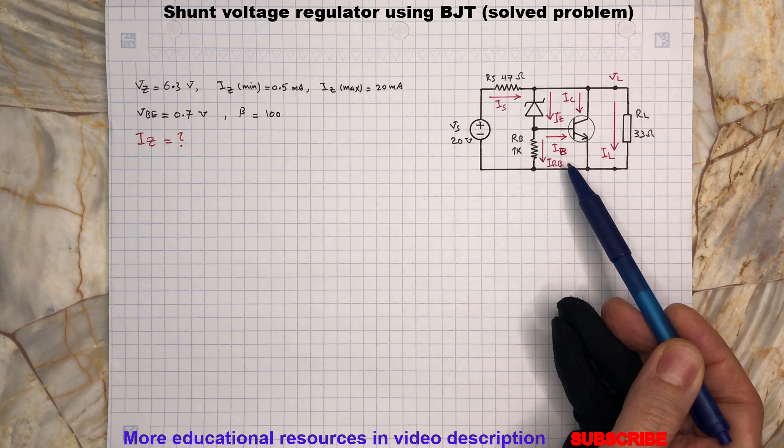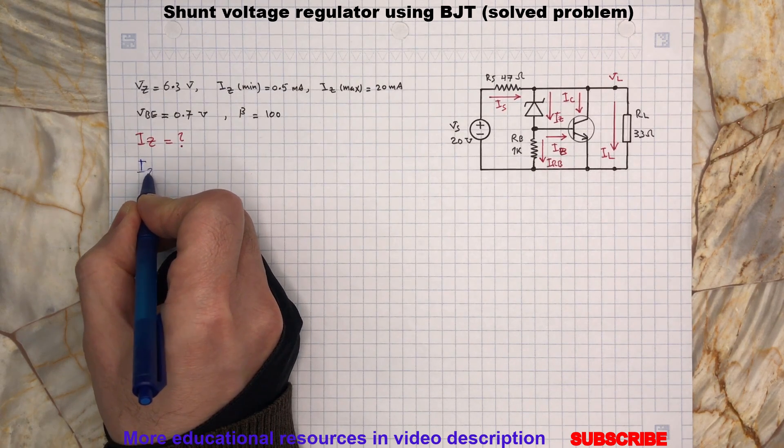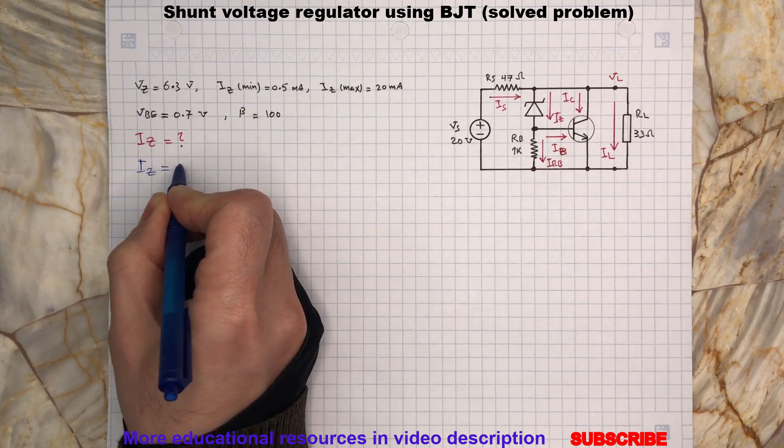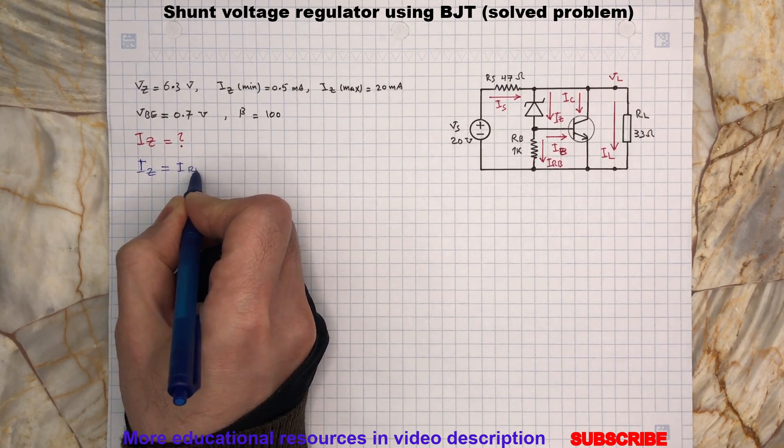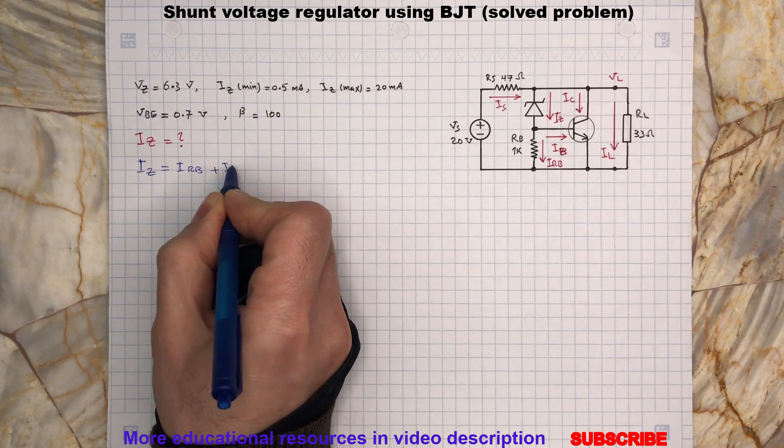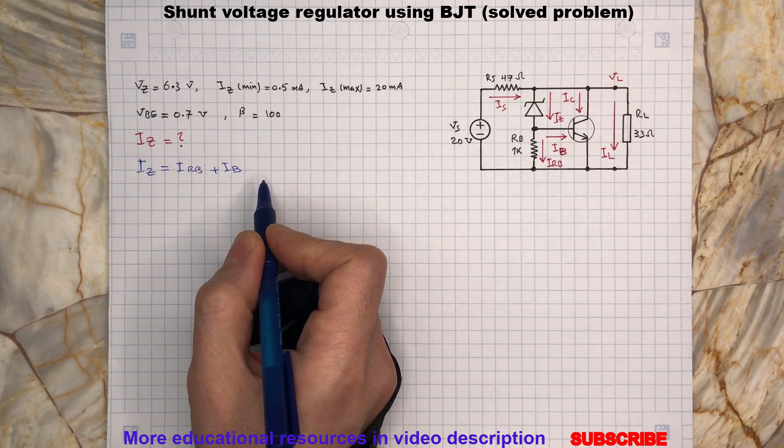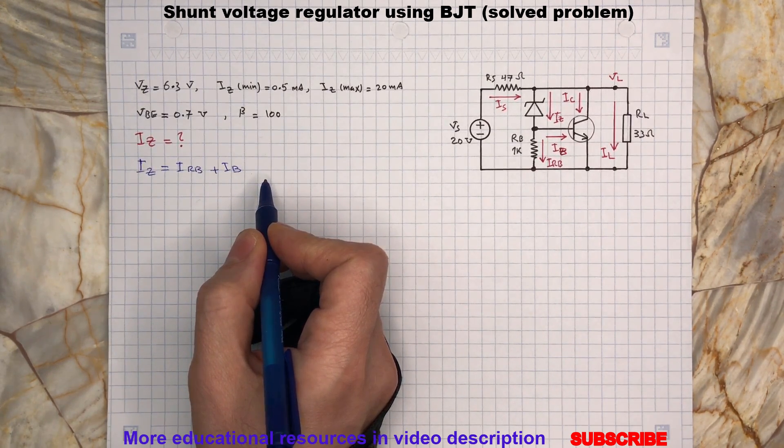As we can see here, IZ equals sum of IREB and IEB, and assuming the transistor is on, then we can write...